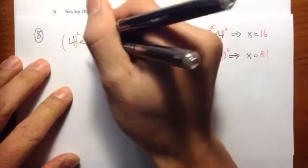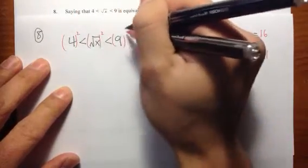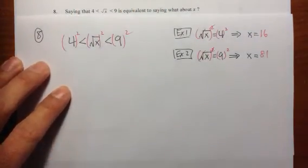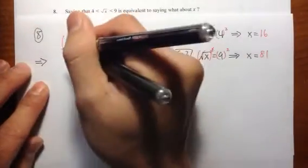And let me do that. Square, square, square. Raise everything to the second power. This tells us 4 squared, which is 4 times 4, that's 16. And I will keep the inequality sign.